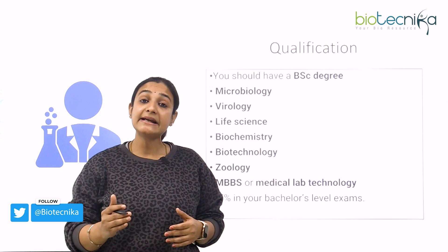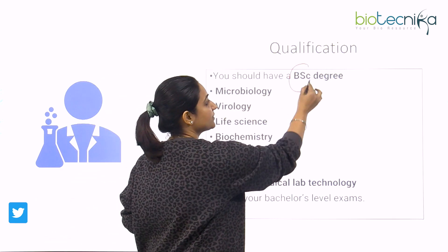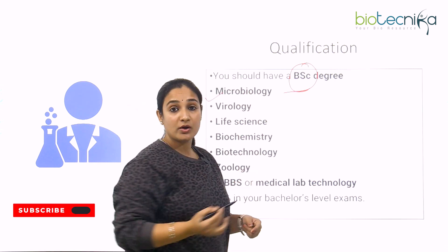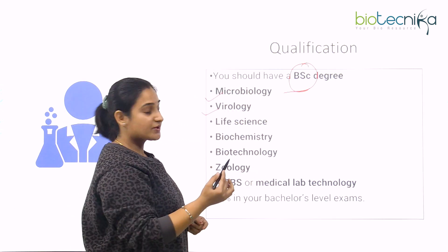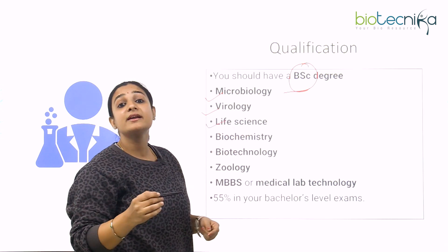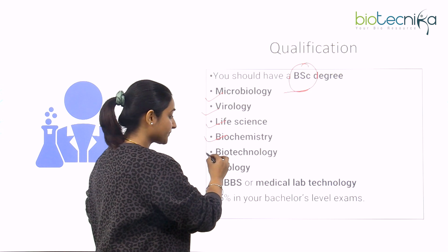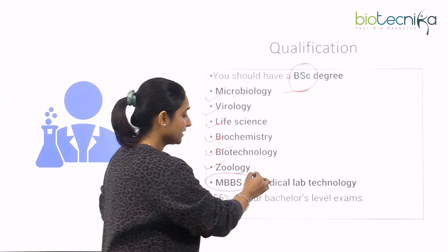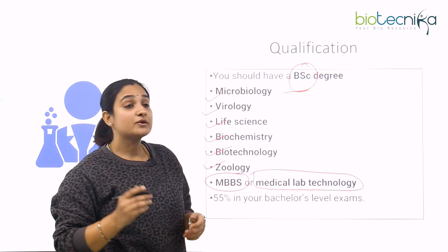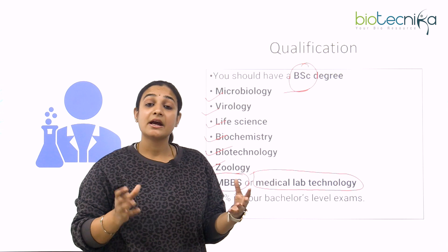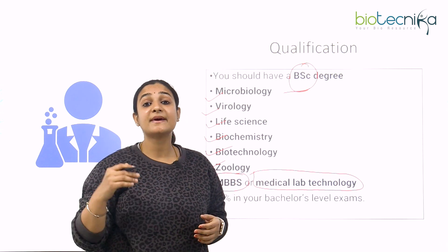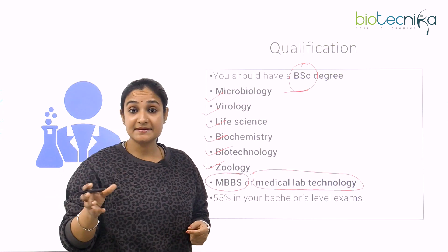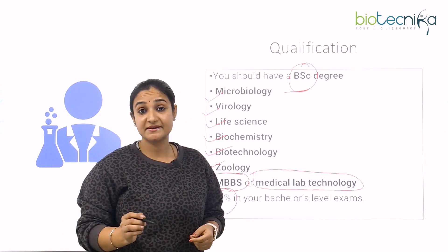When it comes to the qualification needed to become a virologist, the basic requirement is a bachelor's or BSc degree with a specialization in microbiology, virology, or any other life science such as biochemistry, biotechnology or zoology. You could also have done MBBS or a medical lab technology degree. After your bachelor's, you can go for an MSc, and it is always better to complete your master's before seeking employment. To sit for the master's degree, you should have a minimum of 55% in your bachelor's.